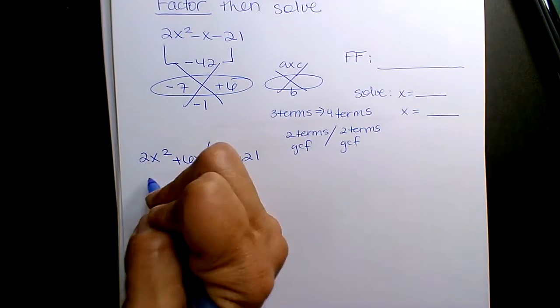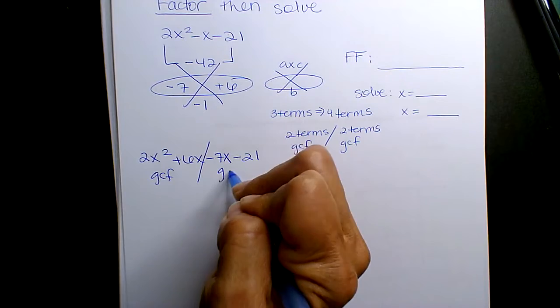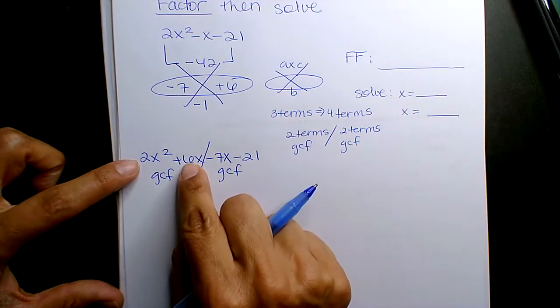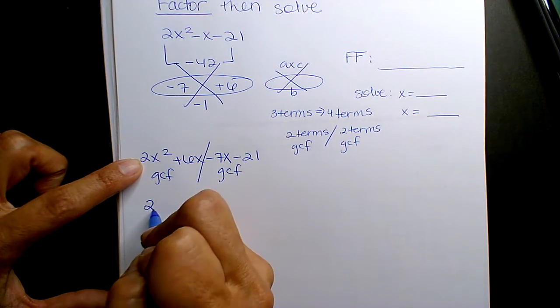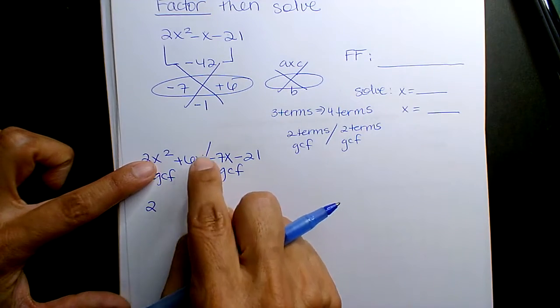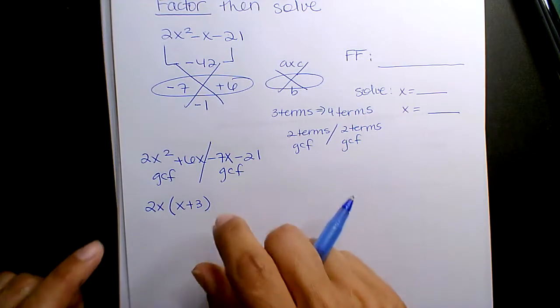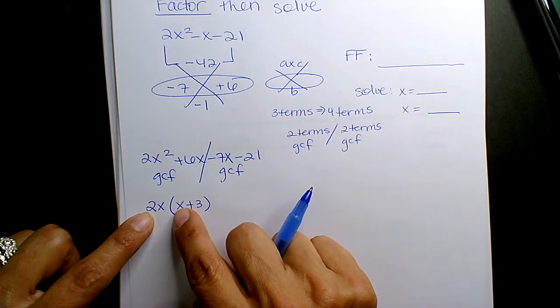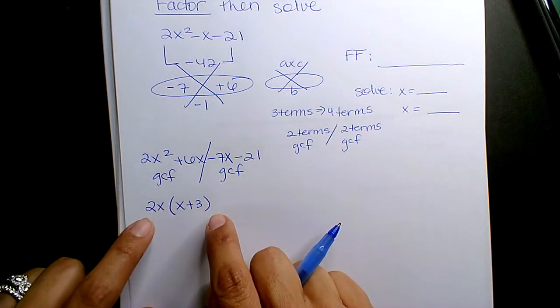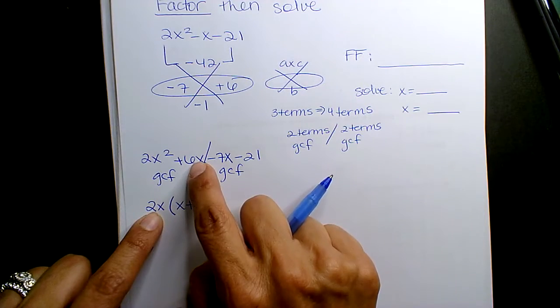Okay, split GCF. So what is divisible into 2 and 6? 2. How many X's? 2X's. 1X. Take one out. What am I left with? X plus 3. And double check. 2X times X is 2X squared. 2X times 3 is 6X.